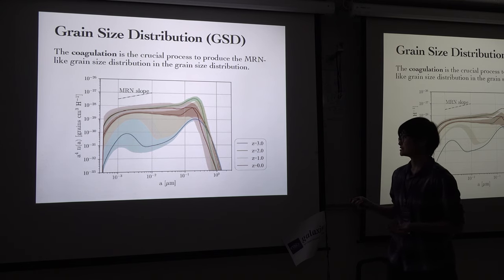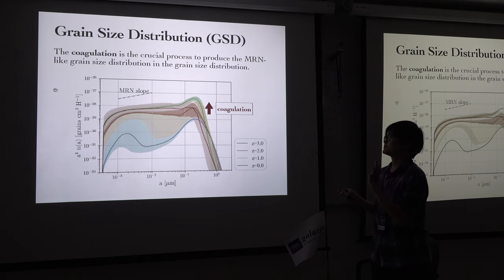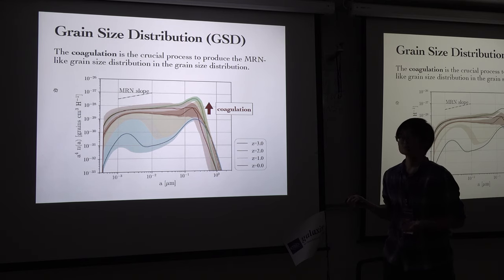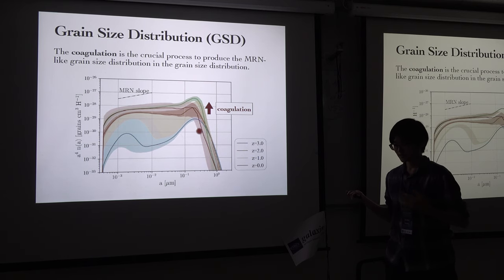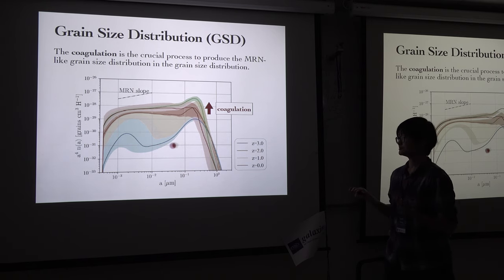Coagulation, as you may remember from previous slides, is a process happening in very dense interstellar medium. So if we cannot reproduce dense ISM in the simulation, this part might be missing or underestimated. That is a crucial consideration. Based on our grain size distribution, we also calculate the extinction curve.